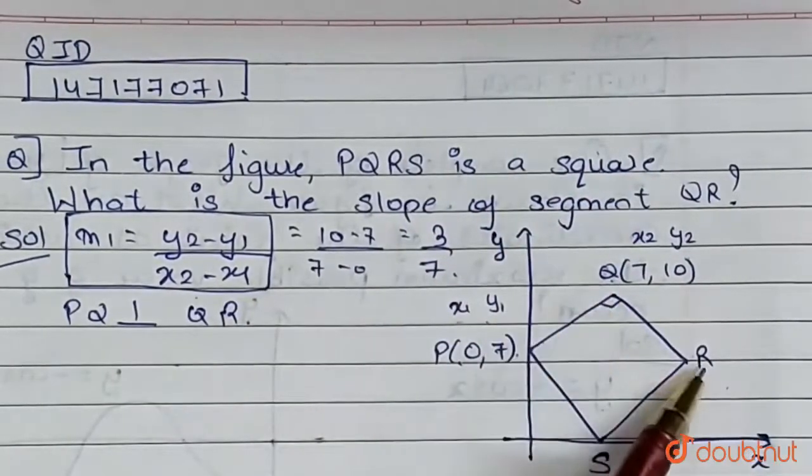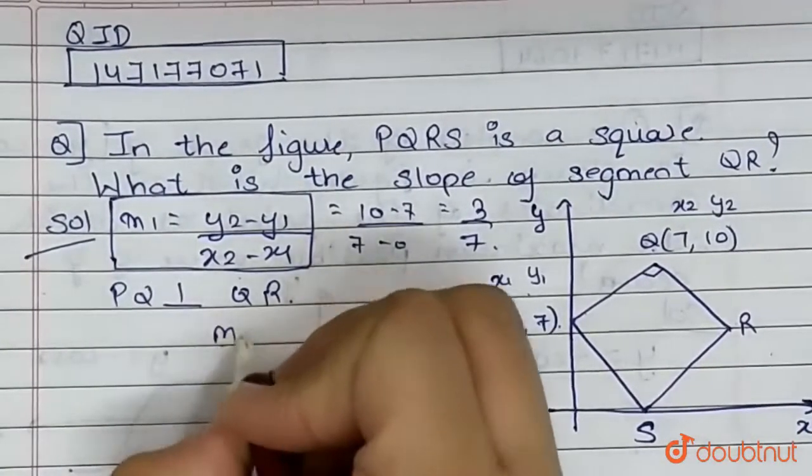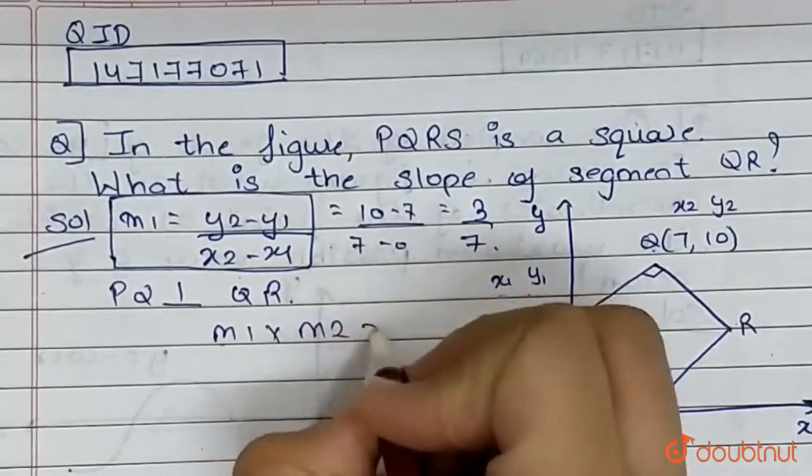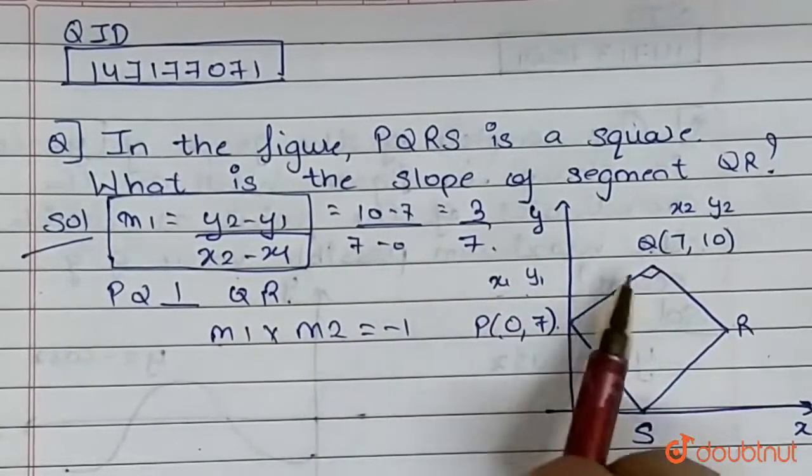Now we know that if two lines are perpendicular, the product of the slopes equals minus 1. So m1 into m2 equals minus 1, where m1 is the slope of PQ and m2 is the slope of QR.